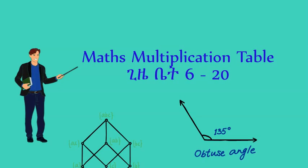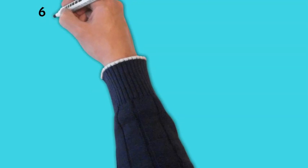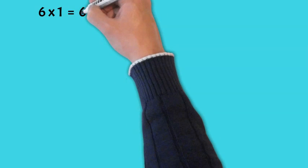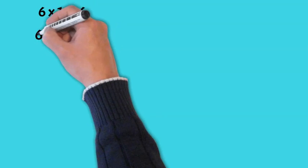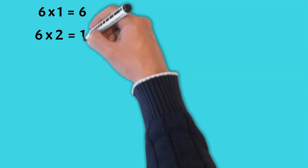We are going to learn Math multiplication tables. All right: 6 times 1 is 6, 6 times 2 is 12.